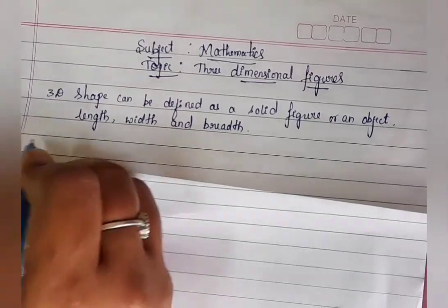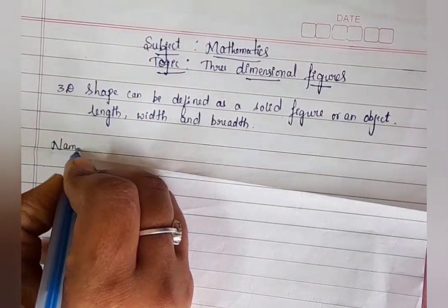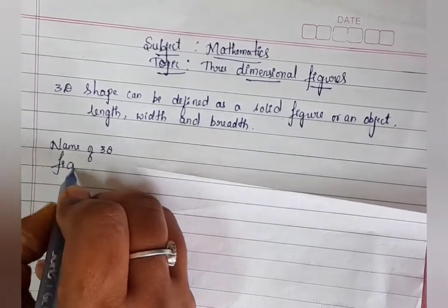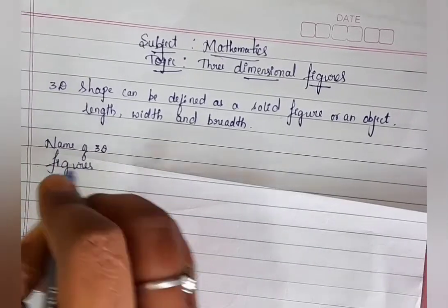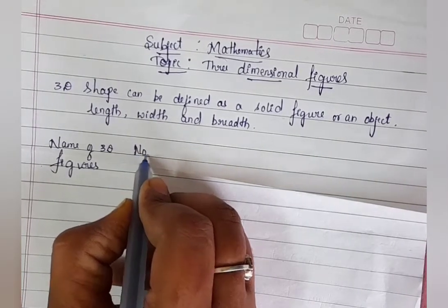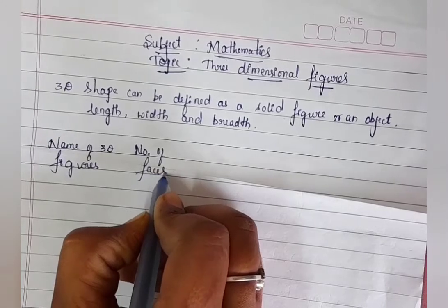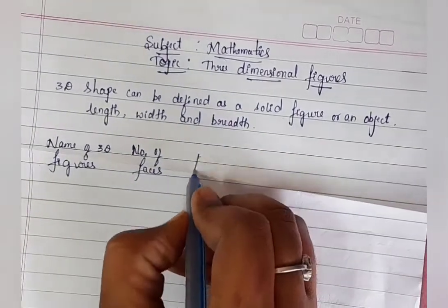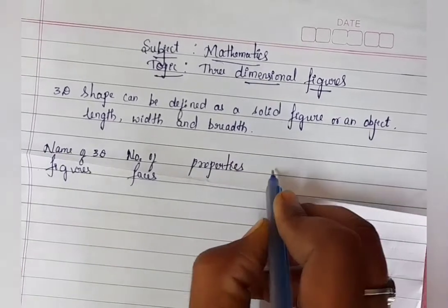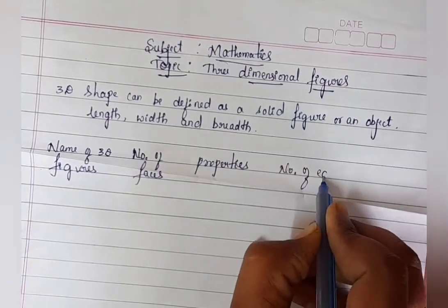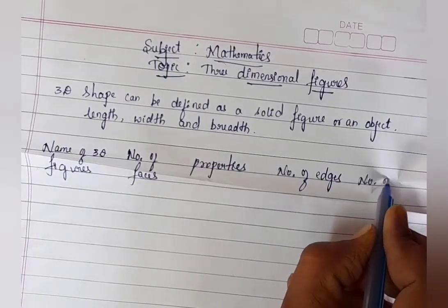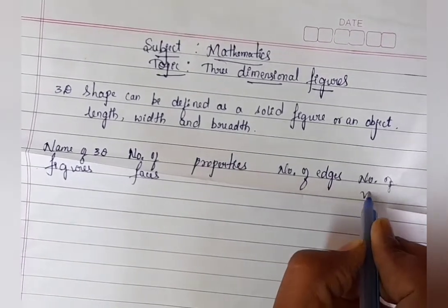Observe here. Study the following table showing: name of 3D figures, number of faces and properties, number of edges, and number of vertices.